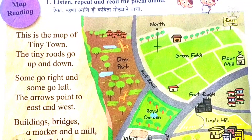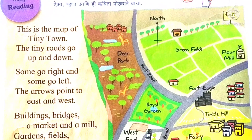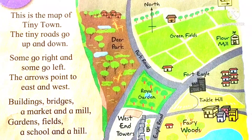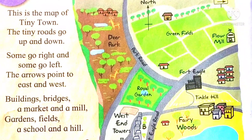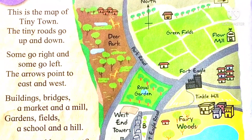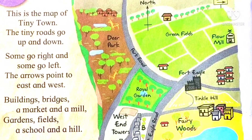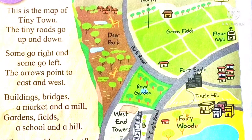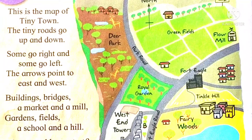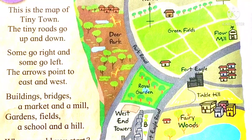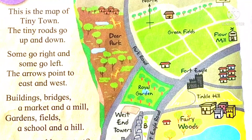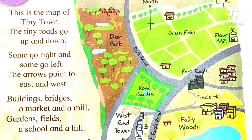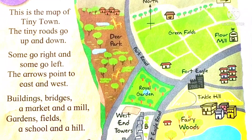This is the map of tiny town. The tiny roads go up and down. Some go right and some go left. The arrows point to east and west.